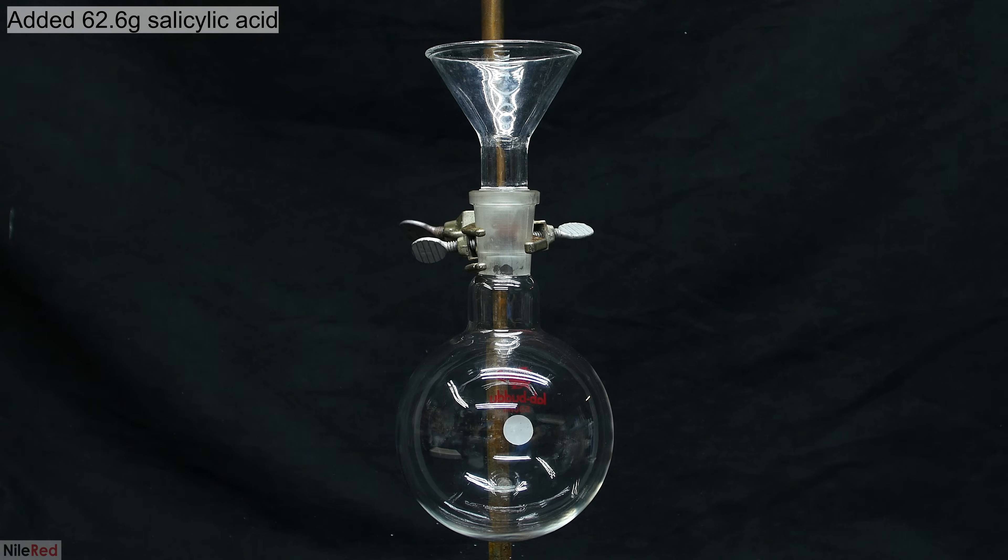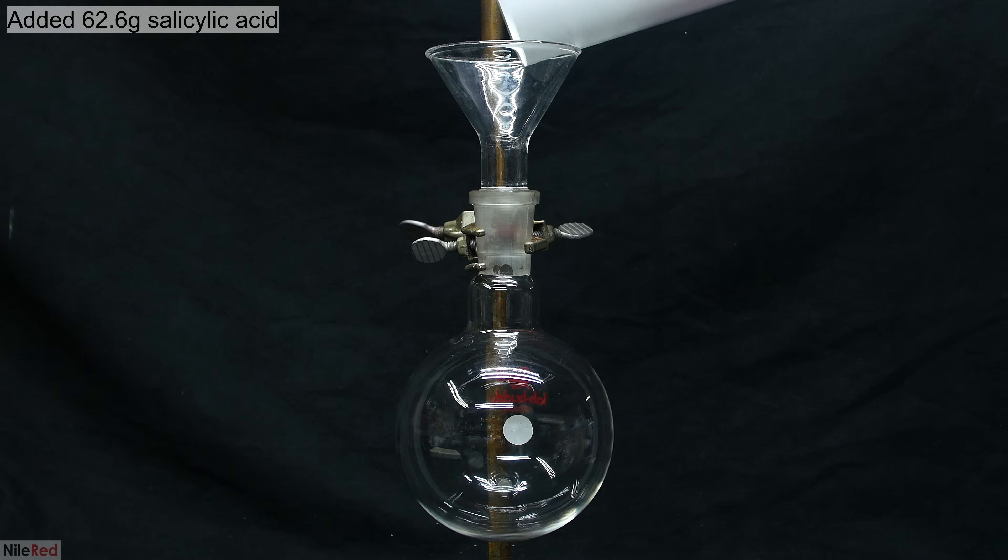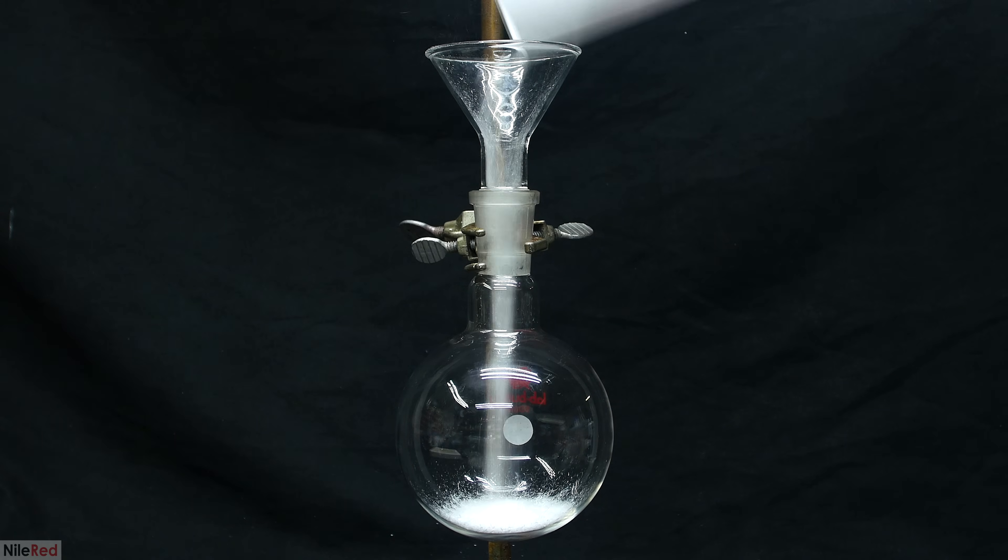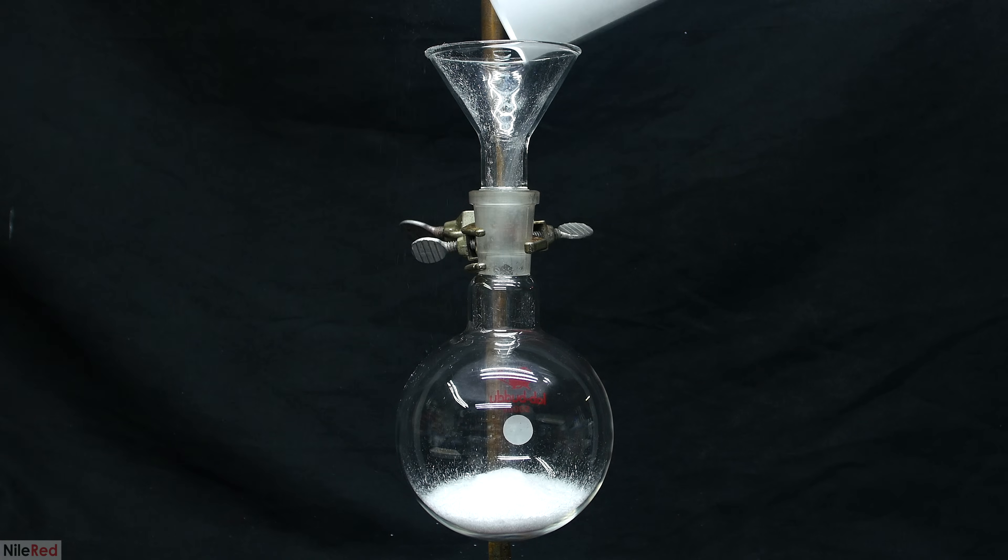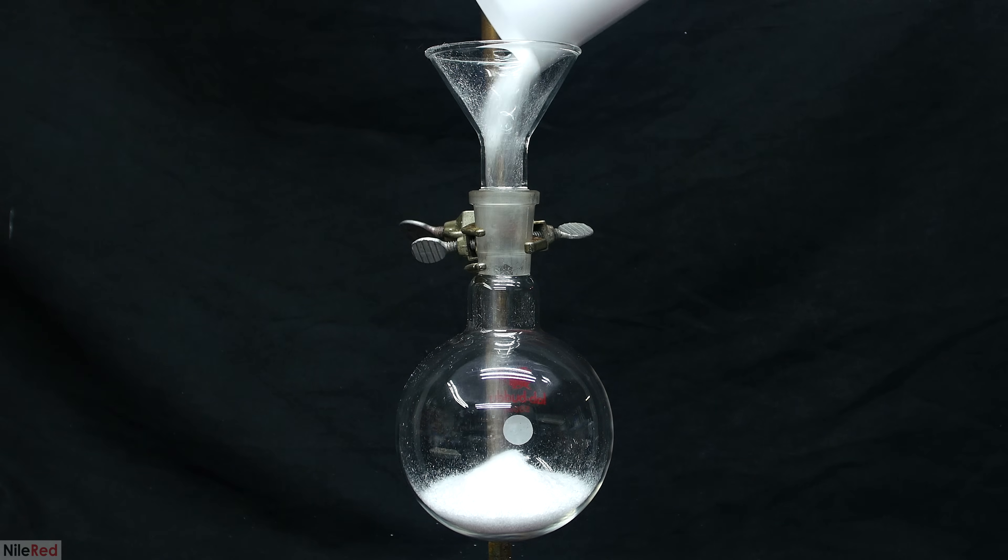To start things off, I add all of the salicylic acid to a round-bottom flask. Some of you might be wondering why I used a 500 milliliter flask, when everything probably could have easily fit in a 250.